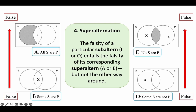Similarly, this applies to E and O. If it's false that some bananas are not yellow, then it must be false that no bananas are yellow. Because if I deny that some bananas are not yellow, I affirm that some bananas are yellow, and consequently it would be false that no bananas are yellow. So falsity moves upward — falsity goes up, but it doesn't go down.